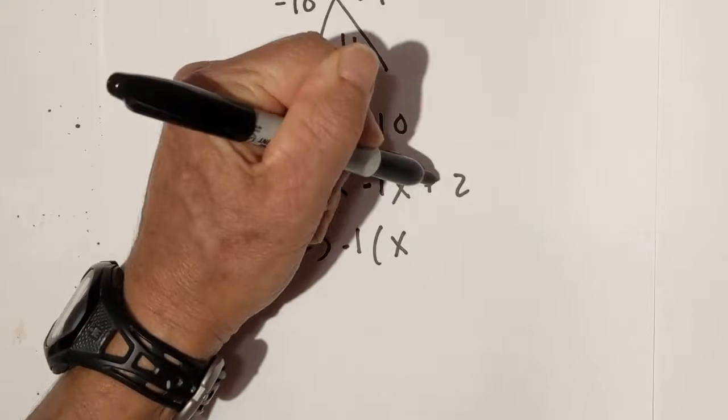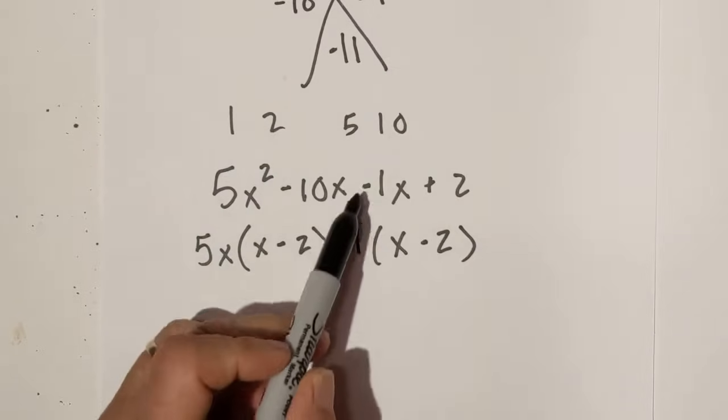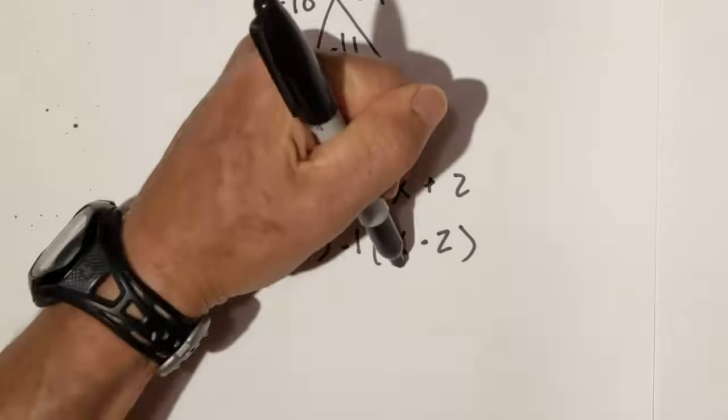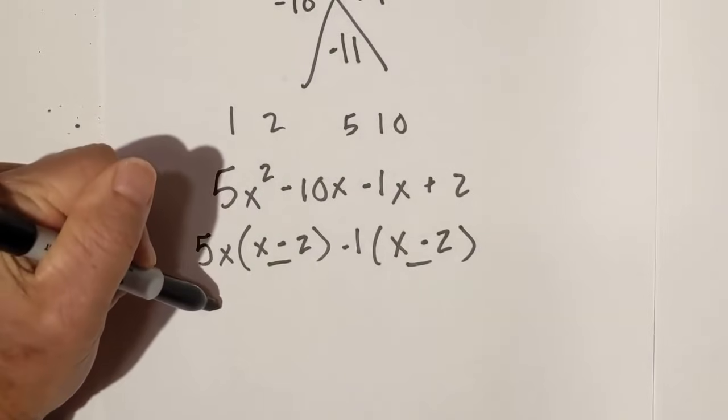You have two common binomials, so I'm going to write them out front. And what do I have remaining? 5x minus 1.